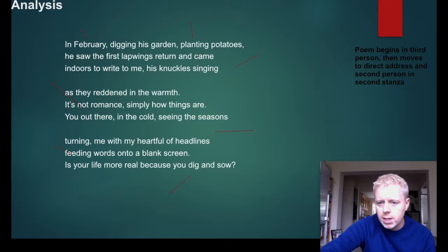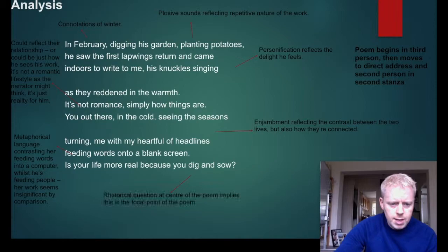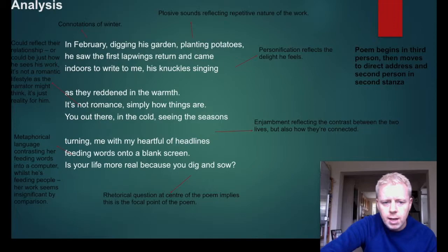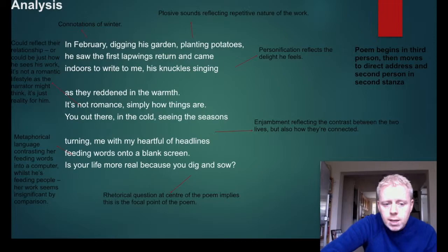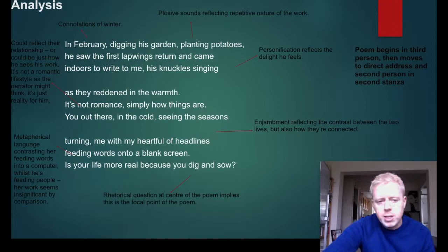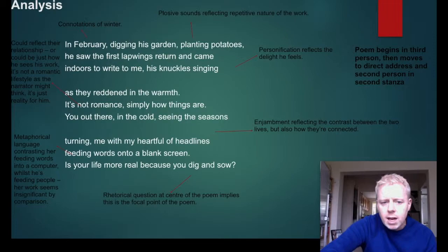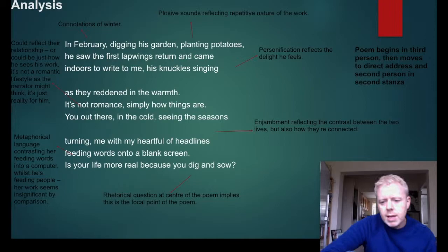The poem begins in third person then moves to direct address and second person in the second stanza. The opening — 'In February, digging in his garden, planting potatoes, he saw the first lapwings return and came indoors to write to me, his knuckles singing as they reddened in the warmth' — 'In February' has connotations of winter. 'Planting potatoes' uses plosive sounds reflecting the repetitive nature of his work. 'His knuckles singing' is personification implying he's enjoying his work and the delight he feels as they reddened in the warmth.